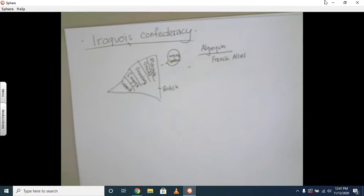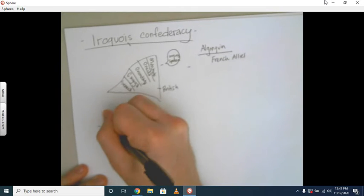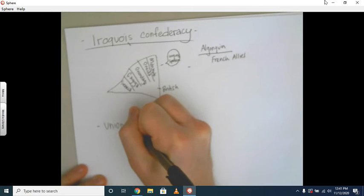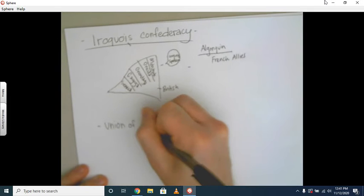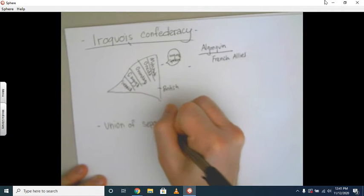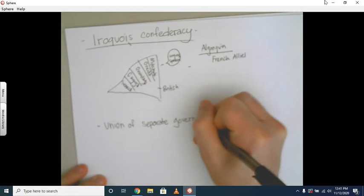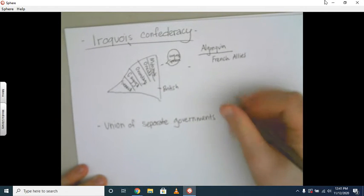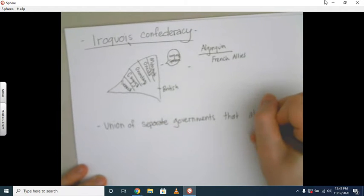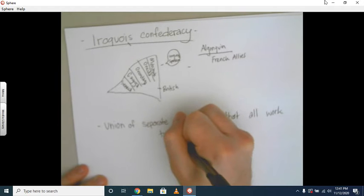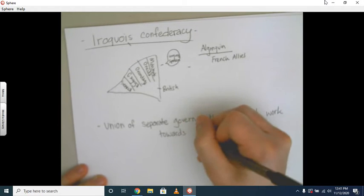Essentially, the Iroquois are surrounded on all sides by people they consider enemies, so they form a union, they form a confederacy. A confederacy is a union of separate governments or tribes or political groups that all work towards a common goal. For the Iroquois Confederacy, it might be that the common goal is defense.